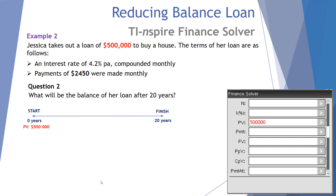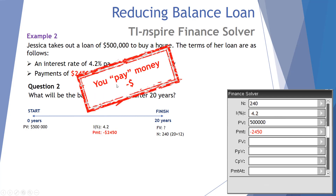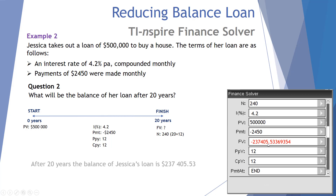Question two: what will be the balance of the loan after 20 years? Starting PV is $500,000 positive. The future value is unknown. N is 20 times 12, which is 240 months, since everything is measured in months. The interest rate is 4.2% per annum compounded monthly, and payments are negative $2,450. Payments per year is 12, compounding periods per year is 12, payment at end. The future value of the loan after 20 years will be $237,405.53 to the nearest cent.